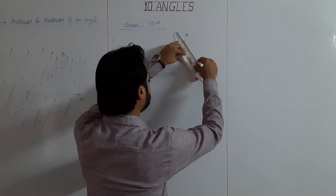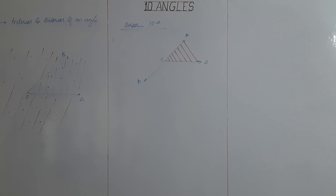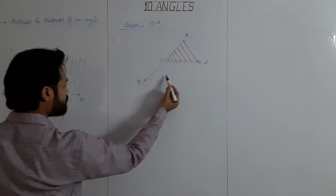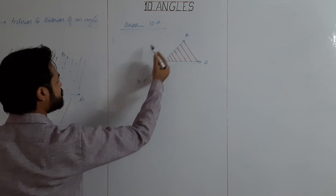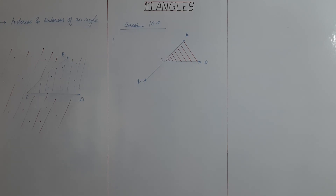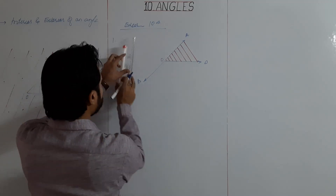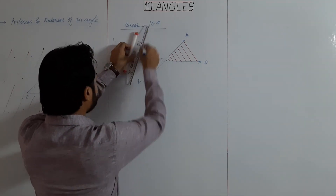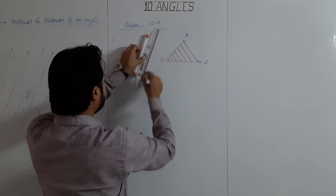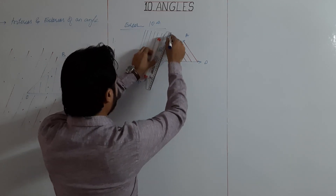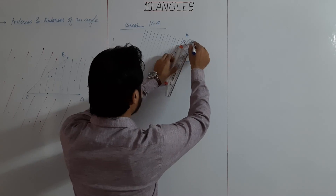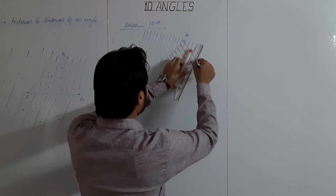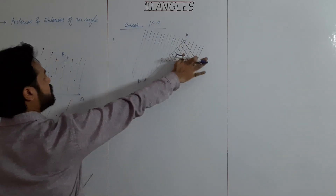Second part: shade the exterior of angle BOD in blue. The interior of AOD has been shaded, and this complete part represents the exterior of angle BOD. So we shade the exterior of BOD — this region, up to this line. This is the exterior of BOD.